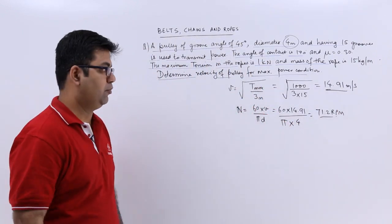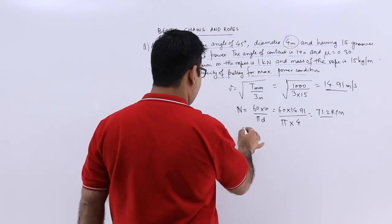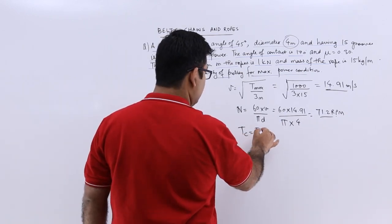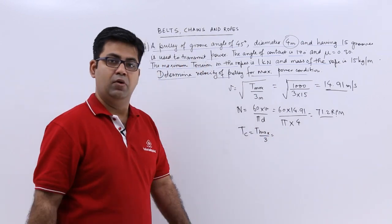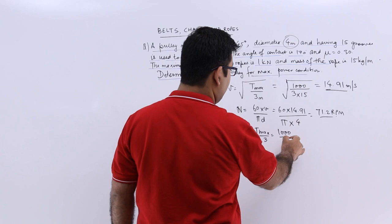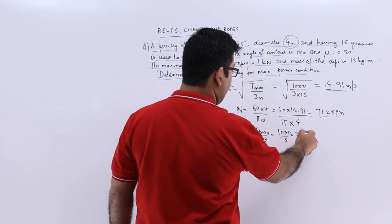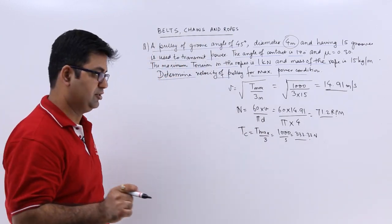Now for maximum power, we know that the centrifugal tension is 1 third of the maximum tension. So maximum tension is 1000 newtons by 3, it gives you 333.33 newtons. So that is the centrifugal tension.